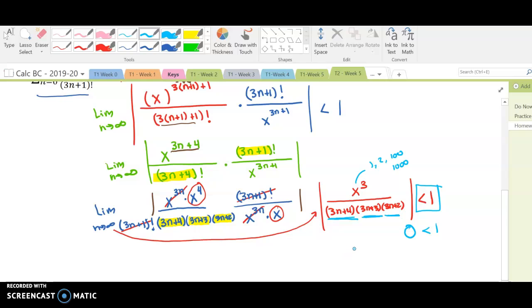So that means my interval of convergence is from negative infinity to infinity, or all real numbers. And so our center is x equals 0, but our radius is infinity.